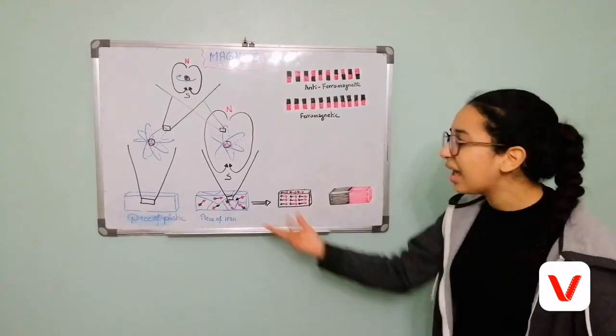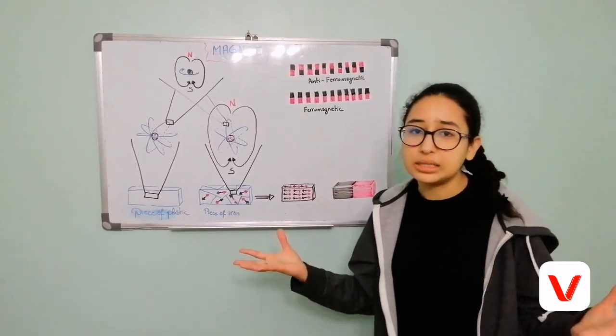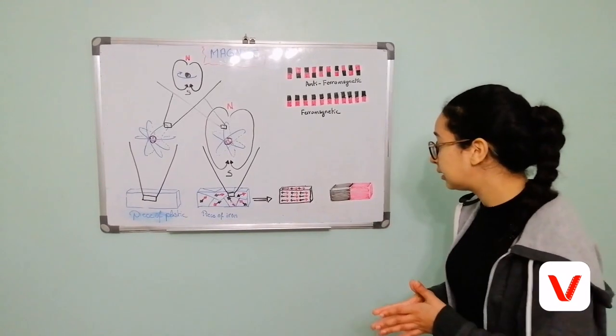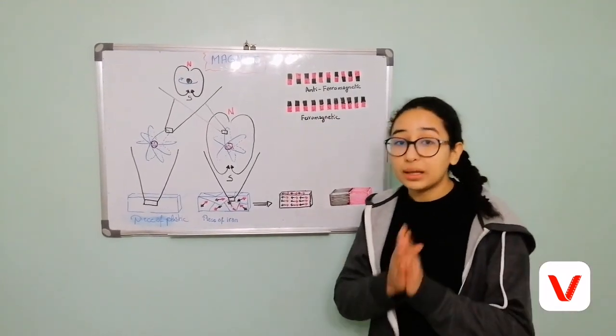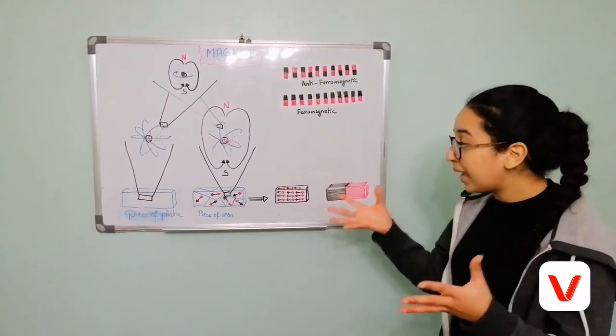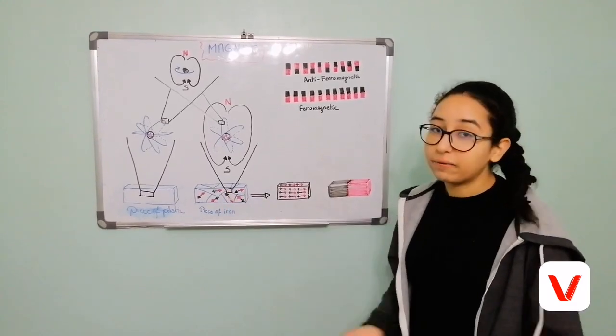However, iron doesn't have any magnetic properties until we apply a strong magnetic field to it. Because at the microscopic level, it's made of a lot of domains that don't generate the same magnetic field.